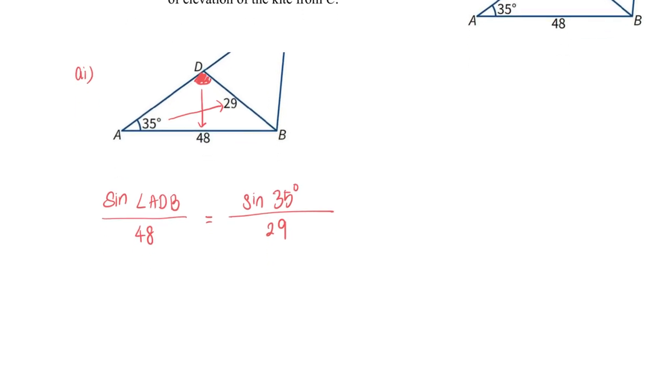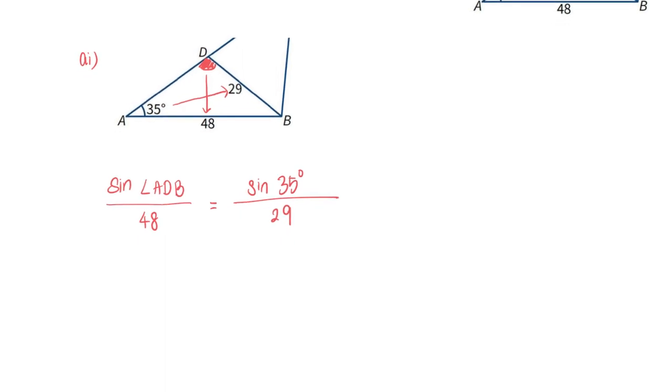When you try to use your calculator, you would get an acute angle. Before I get the sine inverse, this will give me 71.689 to 5 significant figures.